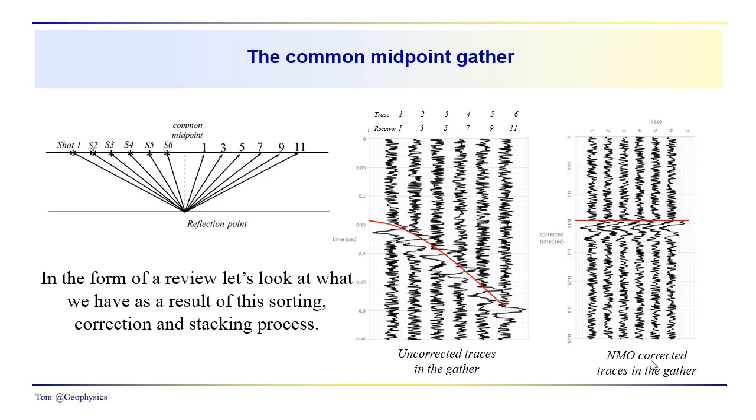So we applied an NMO correction and flattened them all out. We wanted to do this because the data is noisy, because we aren't getting as clean a view of the reflection event as we'd like. So we NMO correct them.